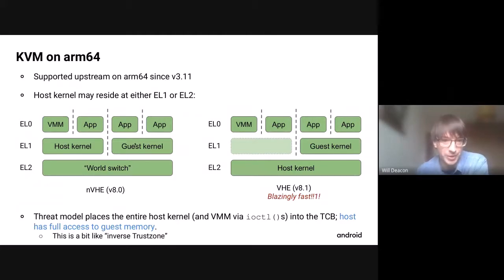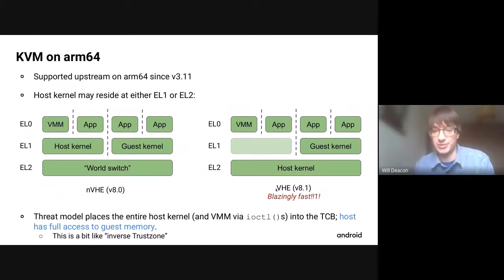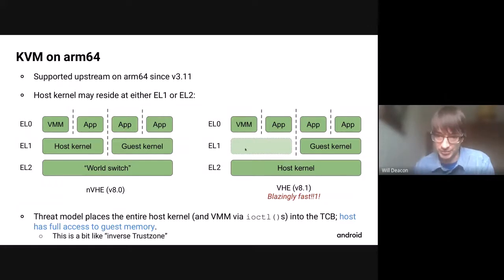Obviously the problem with NVHE is that you jump around quite a lot — you have to keep going up and down through the world switch code, adding latency for things like MMIO exits where you go up from guest, back down to host, back down to VMM in user space, then back up and down again. ARM v8.1 added the Virtualization Host Extensions (VHE), which allow running the host kernel directly at EL2. Without VHE, the EL2 environment is too constrained to run a Linux kernel — but with VHE you can, and you can exception-return straight back down to the guest, making it blazingly fast.